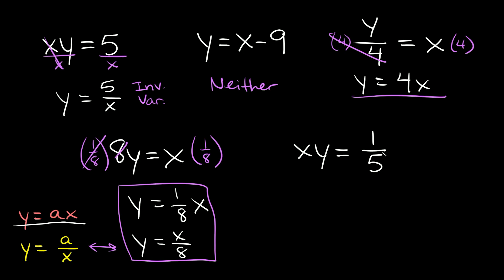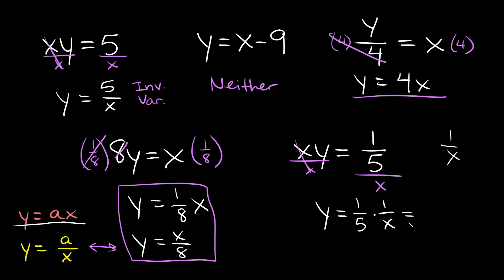Here we have xy is equal to 1/5. We can divide both sides by x, so those cancel out and we get y is equal to 1/5 divided by x. To divide fractions you multiply by the reciprocal — the reciprocal of x is 1 over x — so we multiply 1/5 by 1/x and get y is equal to 1 over 5x. We have some number over x, so this one is inverse variation.